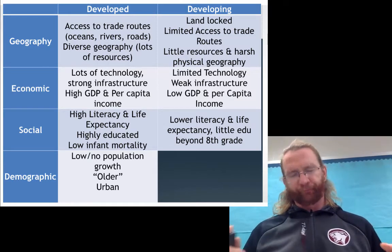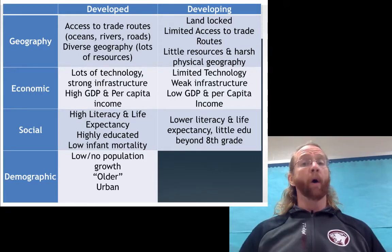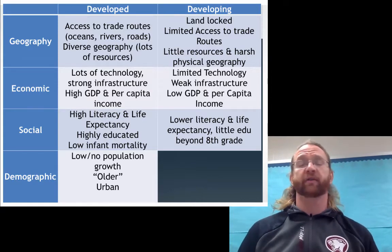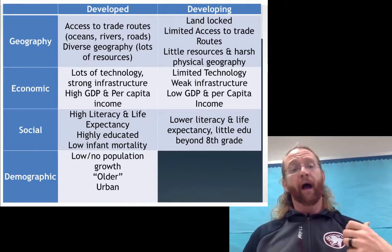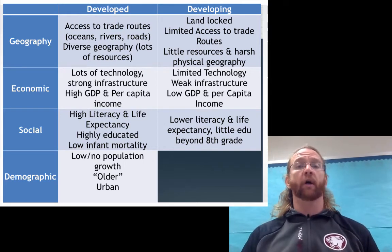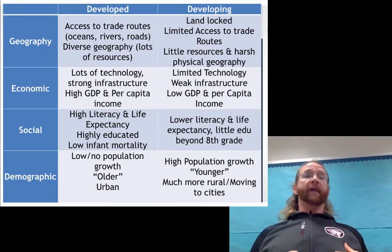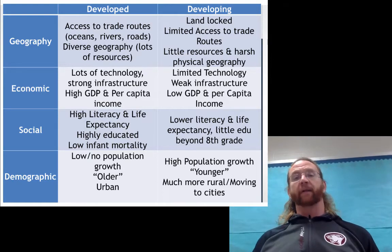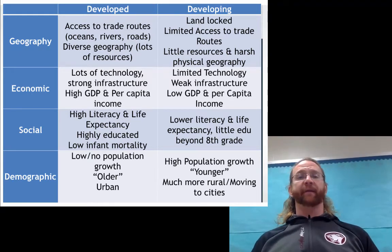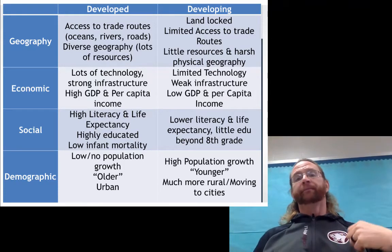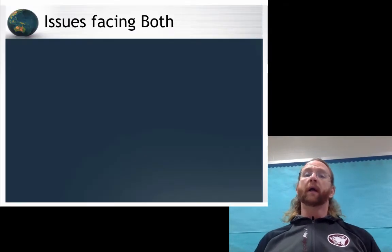Demographically, developed countries either have slow population growth or negative population growth, meaning their populations are actually shrinking naturally — not accounting for immigration. Their populations are much older and much more urban, meaning people live in cities at a higher rate. Developing countries have a much higher population growth rate; their families are larger, and people often move around a lot. They have younger populations due to the higher growth rate. And while many people currently live in rural settings, most are moving to cities to find more work and opportunities.